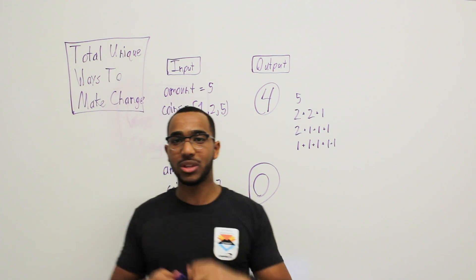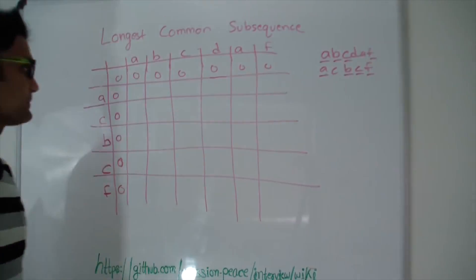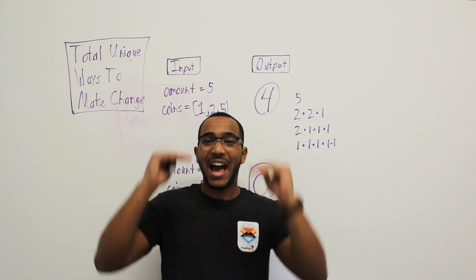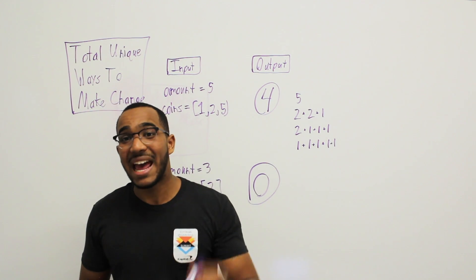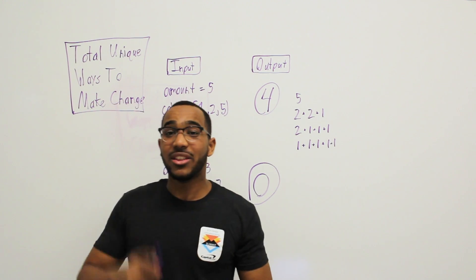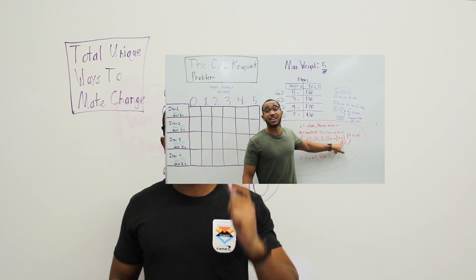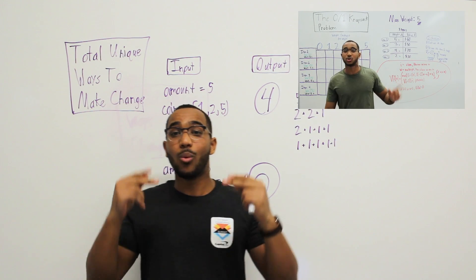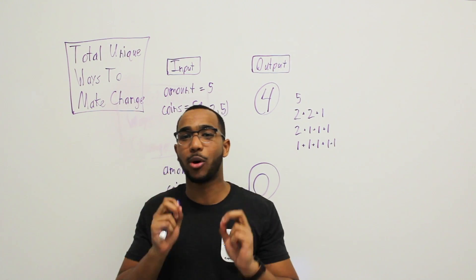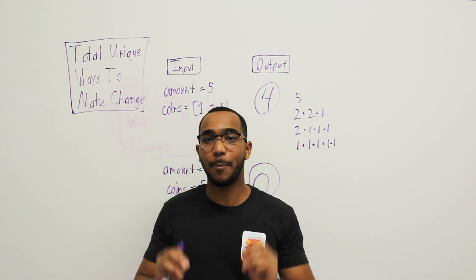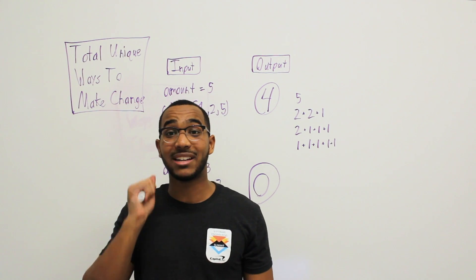So how are we going to do this problem? We will use dynamic programming to solve this question. What we're going to have to do is, at each stage, we are going to consider a certain coin and see how it changes the total amount of ways that we can make change. This is very similar to the zero-one knapsack problem, and you will see what I mean when we go through this dynamic programming table.